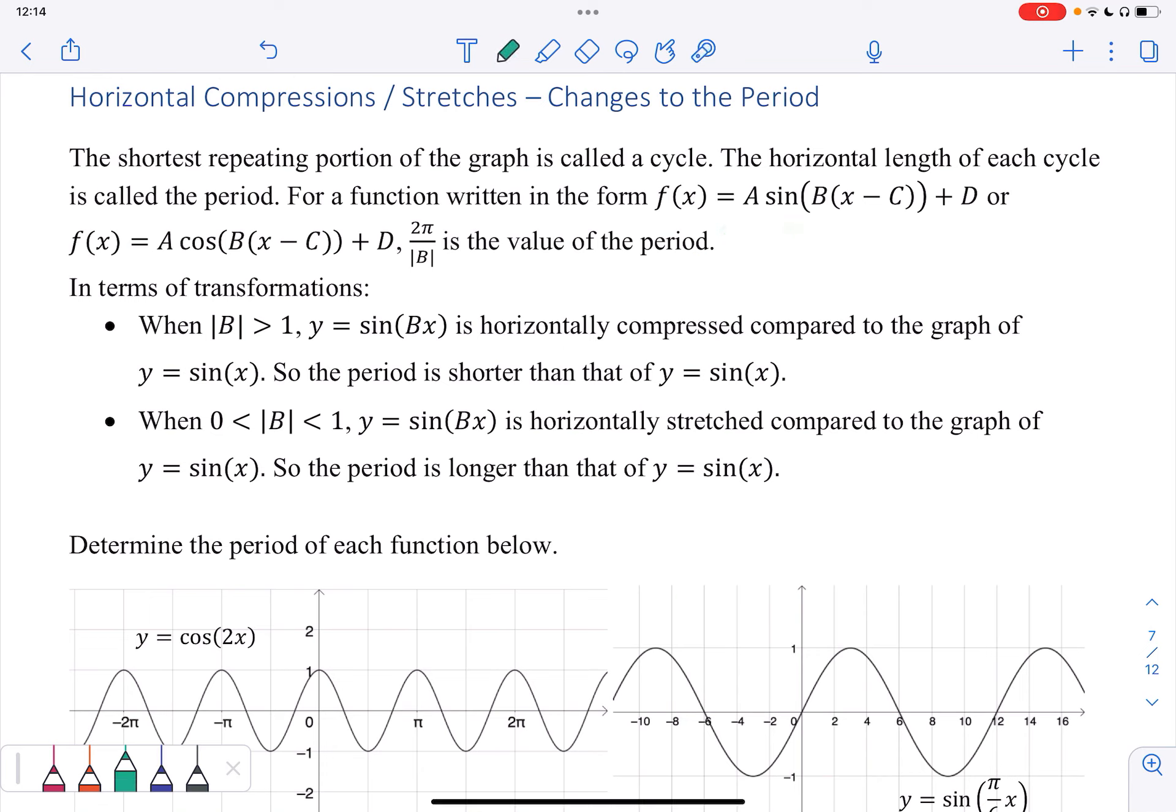In terms of transformations, this is a multiplication on the inside, so it's going to have a horizontal change, and when B is greater than 1, I actually get a horizontal compression. So remember these inside changes are kind of working the opposite of what you might expect. So when that value is bigger than 1, I actually am horizontally compressed, and so the period is shorter.